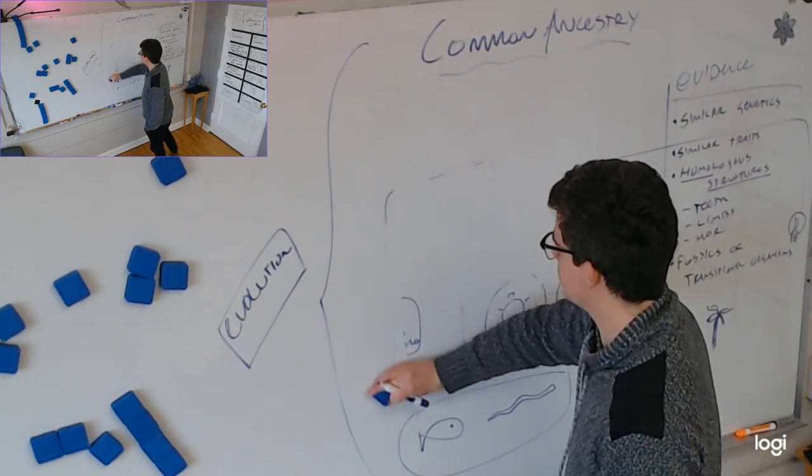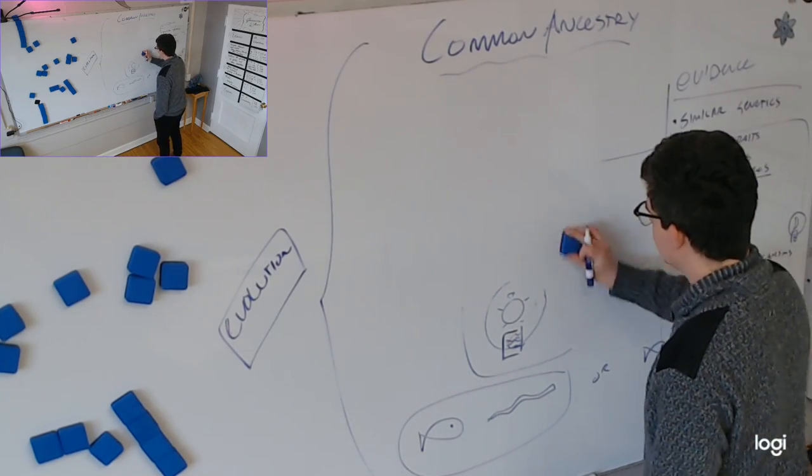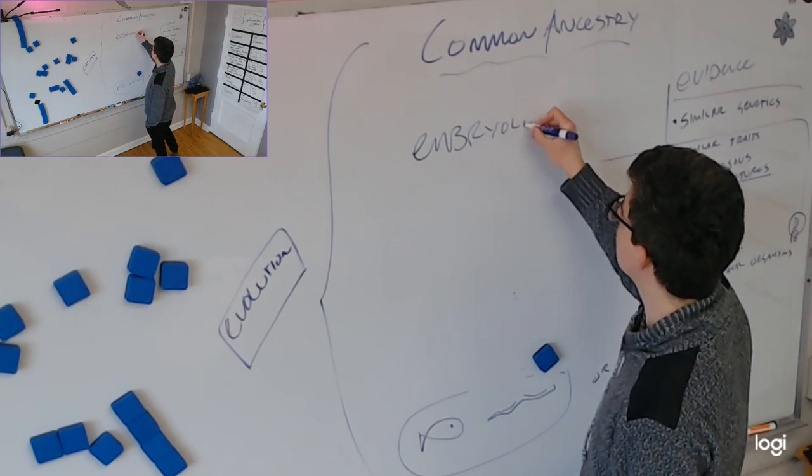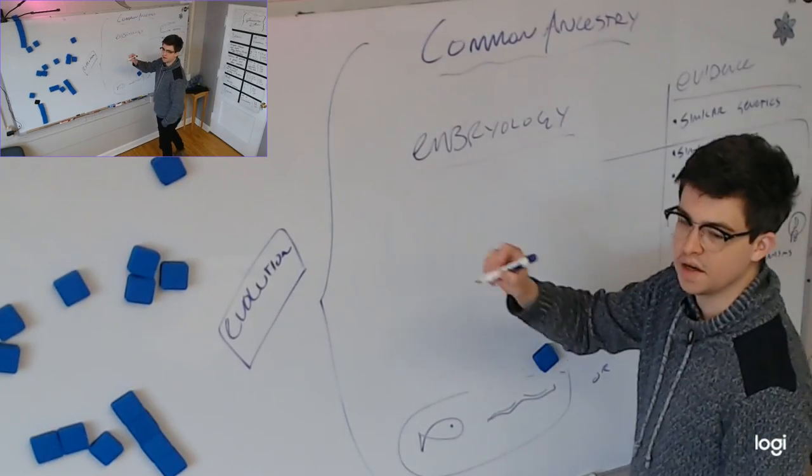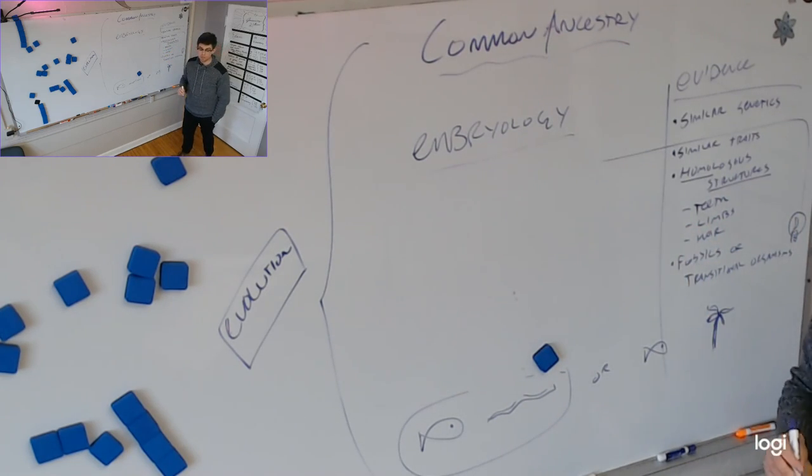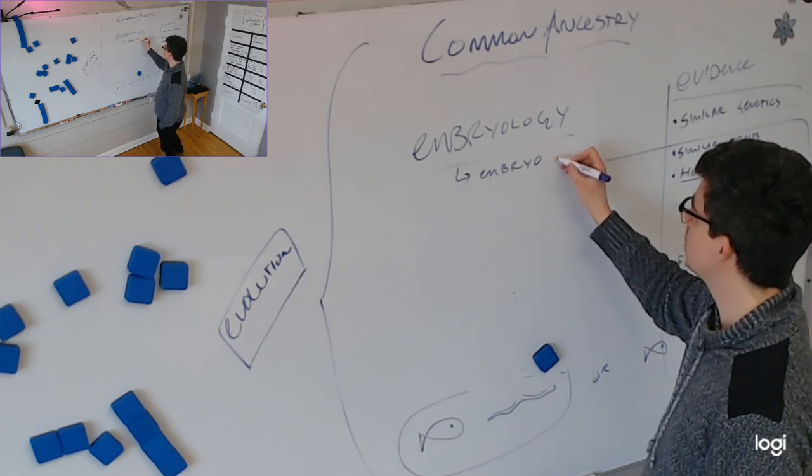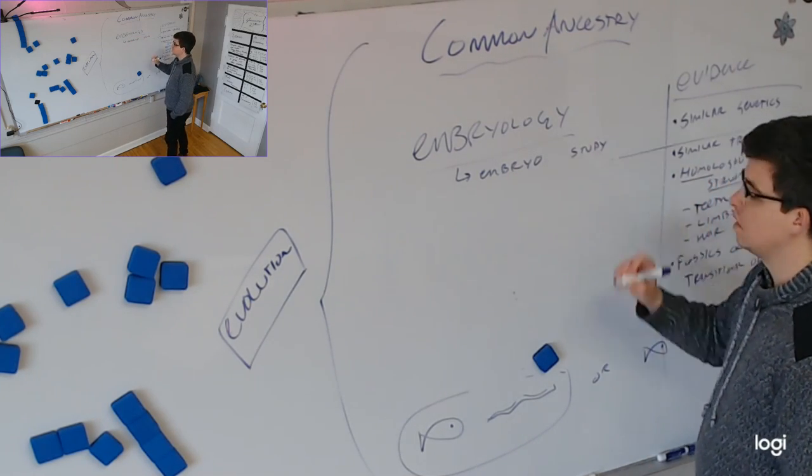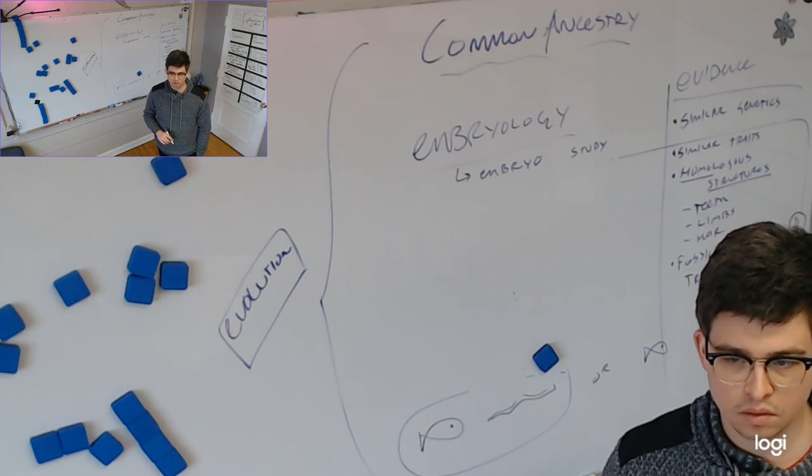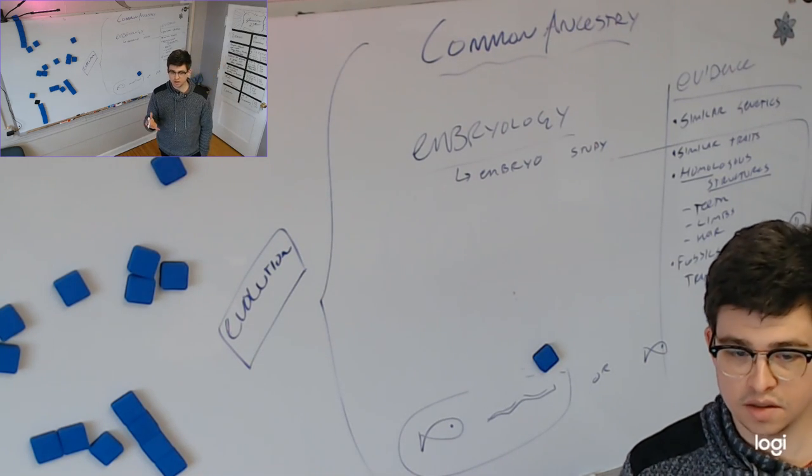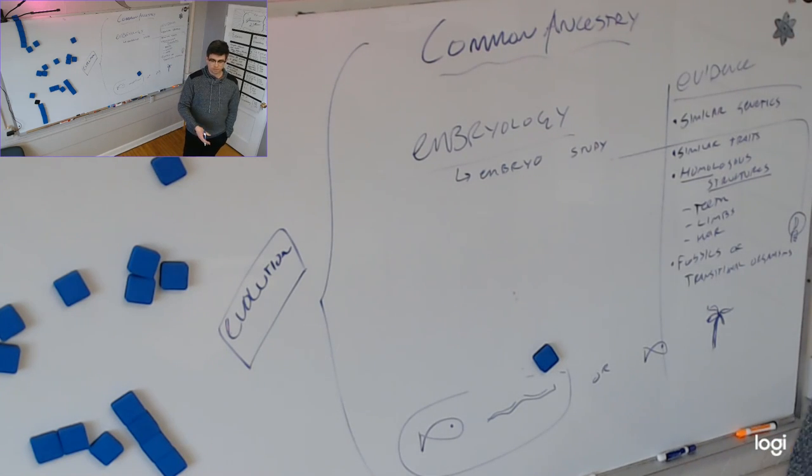The last one we're going to talk about is embryology. What is that probably the study of? Embryology. What is it probably the study of? Yes, it is evidence for that. This is the study of embryos. Have you ever heard of an embryo? What's an embryo? A part of an egg. Yeah, it's a part of an egg. But it's all organisms. All animals, I should say. All animals start out as an embryo, which is an unborn organism.